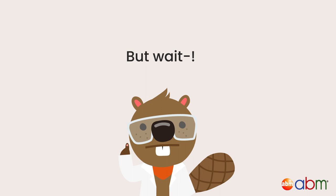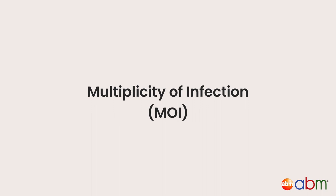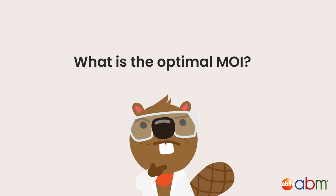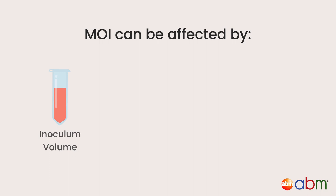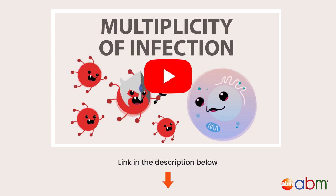Don't rush off to transfect your cells just yet. You still need to determine how many viral particles are needed to successfully infect your cells — a term called multiplicity of infection, or MOI. It is important to determine the optimal MOI needed for efficient transduction. MOI can be affected by factors like inoculum volume, transduction time, and the type of target cell used. We've explained the concept of MOI and how to calculate it in our previous video.